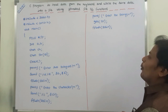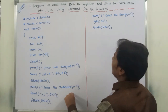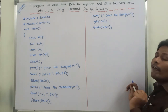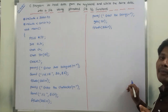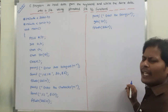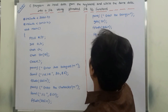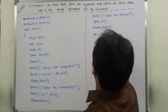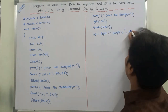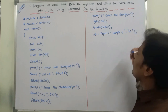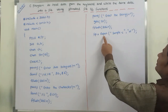First, we have to open the file in write mode, because we are writing the two integers, one character, and the string into a file. So fp = fopen("sample.c", "w"). The file sample.c is opened using the fopen function in write mode, and it is pointed to by the file pointer fp.